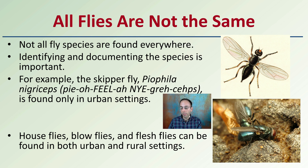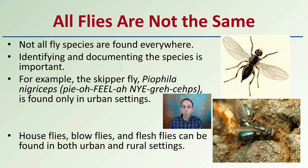Not all flies are the same. Not all fly species are found everywhere, so identifying and documenting the species is important. For example, the skipper fly is only found in urban settings, while house and blow flies are flesh flies that can be found in both urban and rural settings. Knowing not only the general species but also the scientific name can be important. This is where an entomologist would come in and specifically identify that particular fly, which would be really important for the investigative process.